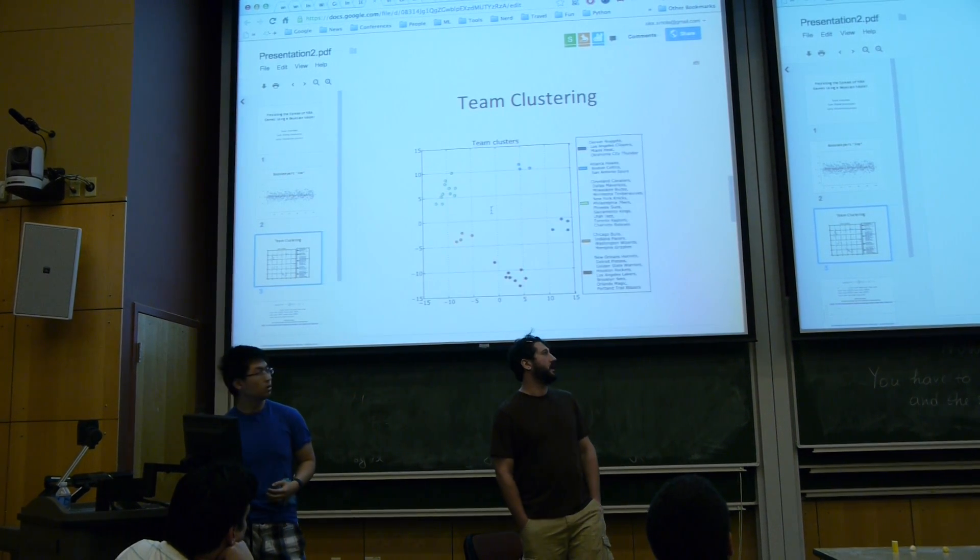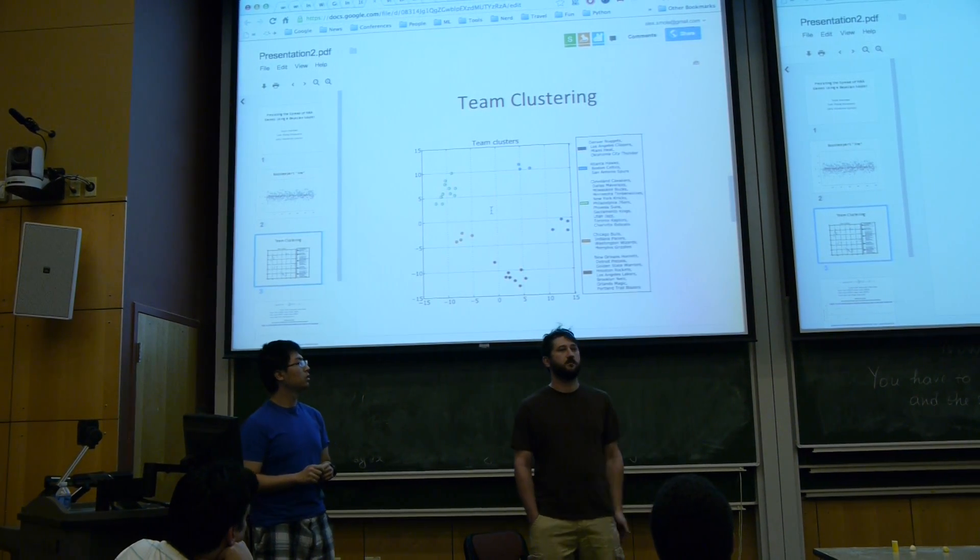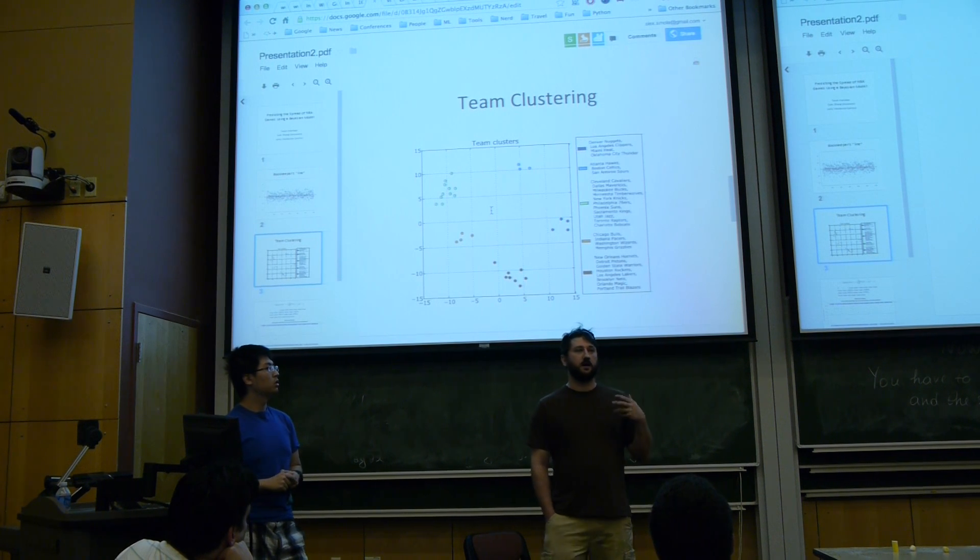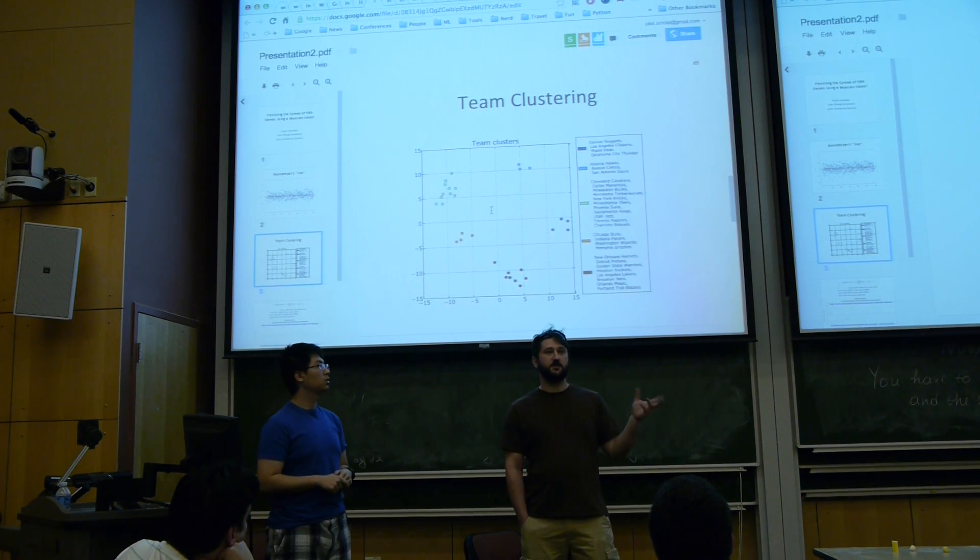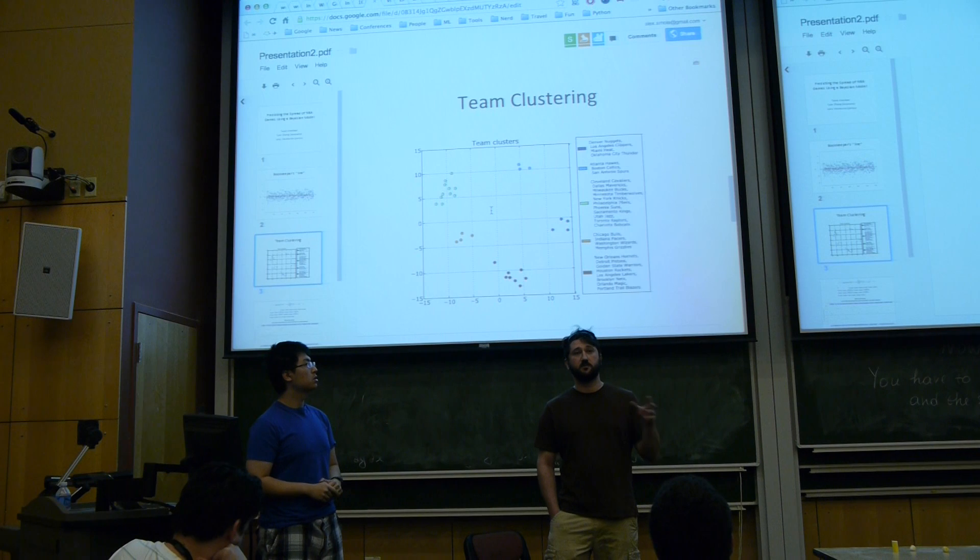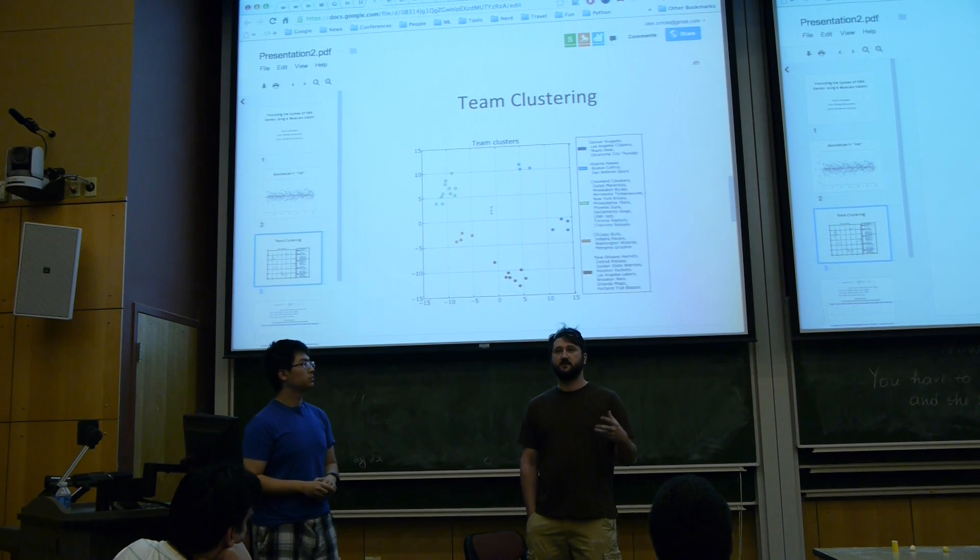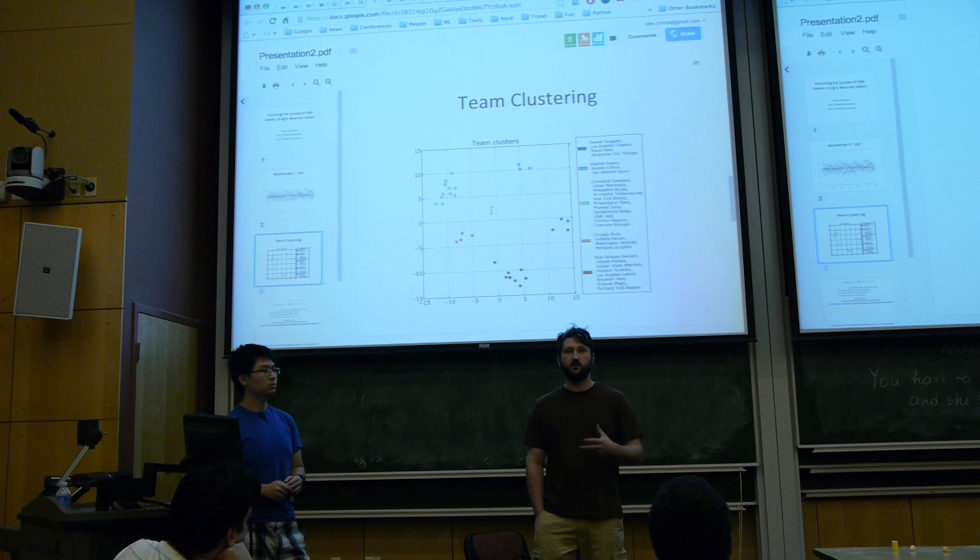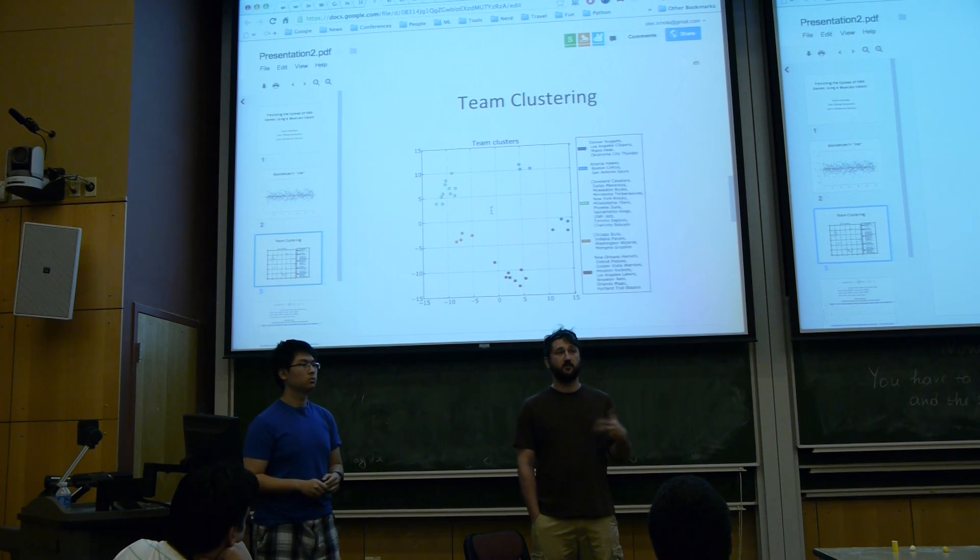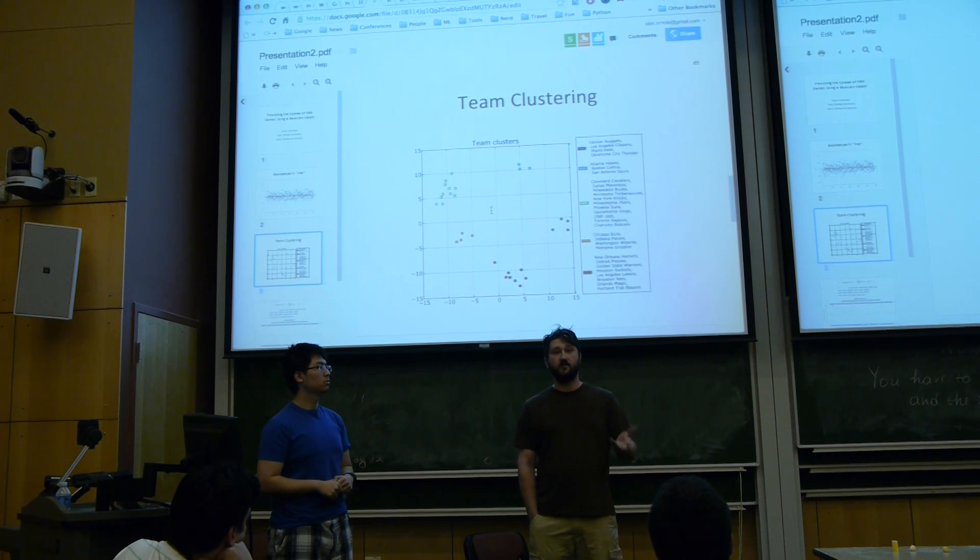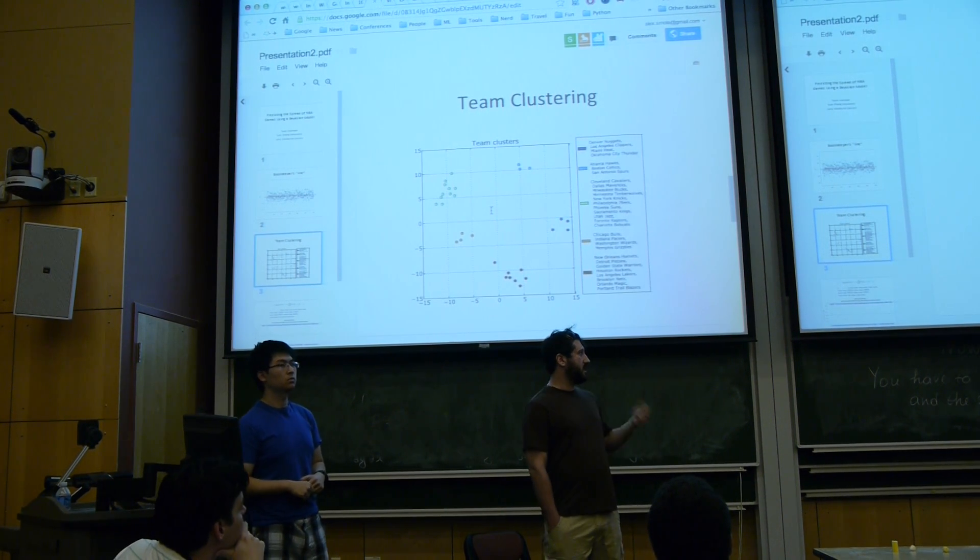So the idea behind this is that we use a Gaussian mixture model to separate the teams into clusters based on their similarity of play. The idea behind this is that instead of trying to predict a matchup between two teams from two different conferences who have never played before halfway into the season, you actually have some history to fall back on when making your prediction.